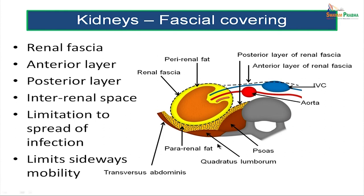This picture again shows the various fascial coverings of the kidney: the outer true capsule, the perirenal fat, and the renal fascia. Note that the renal fascia extends medially and connects with its fellow of the opposite side, enclosing the aorta and the inferior vena cava. The anterior layer of the renal fascia is also called the fascia of Toldt, and the posterior layer is also called the layer of Zuckerkandl. The intermediate space between the anterior and posterior layers is called the inter-renal space, and a partition extending between these two layers prevents sideways mobility of the kidneys.